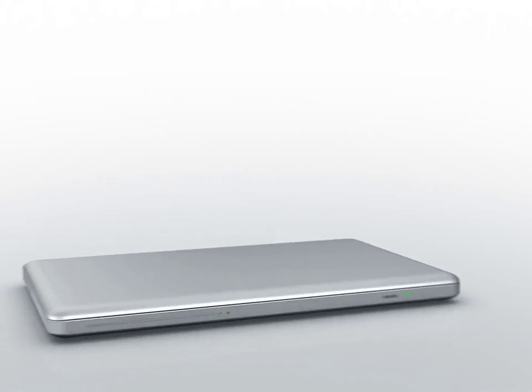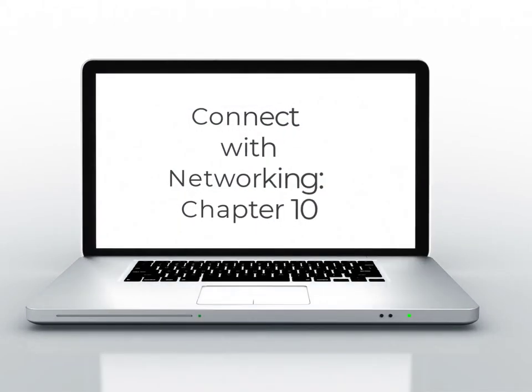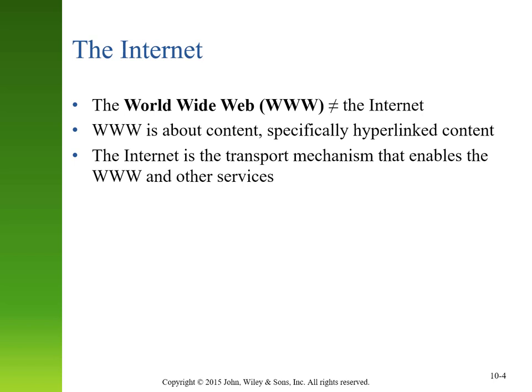Hi everyone. In this Connect with Networking video, we're going to be discussing Chapter 10, the Internet. In the past, we would often hear people interchangeably use the term Internet and World Wide Web. But in this class, we are certainly going to differentiate between these two. The World Wide Web is all about hyperlinked content — web pages. But what we're going to be talking about in this chapter is how we're transporting both World Wide Web traffic and other types of traffic across the publicly available Internet network.